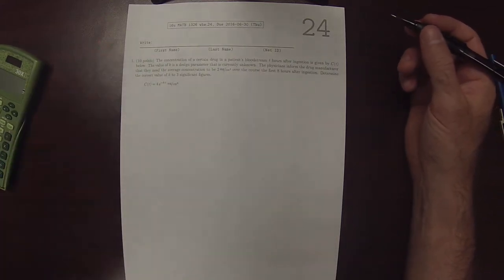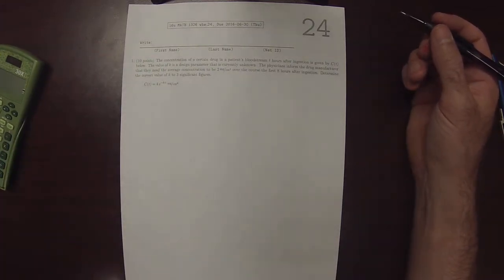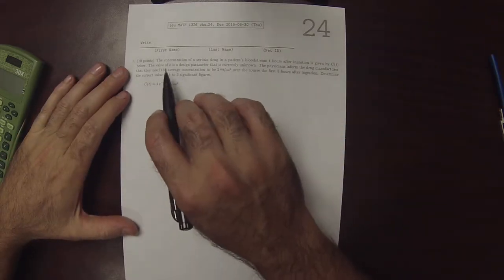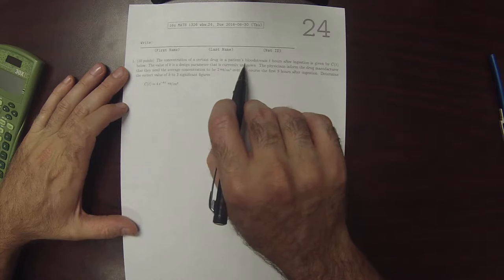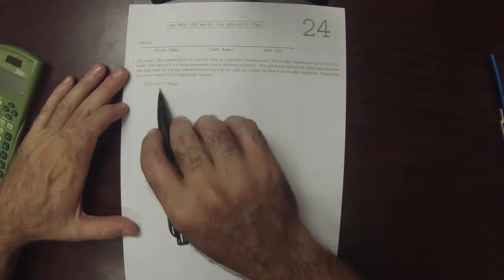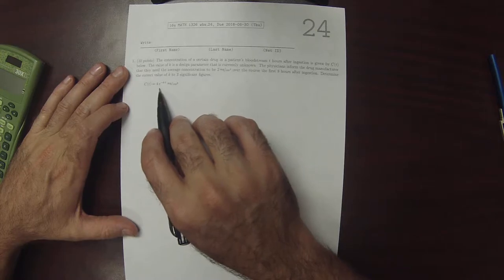This is the solution to written homework 24. It says, the concentration of a certain drug in the patient's bloodstream, T hours after ingestion, is given by this C.